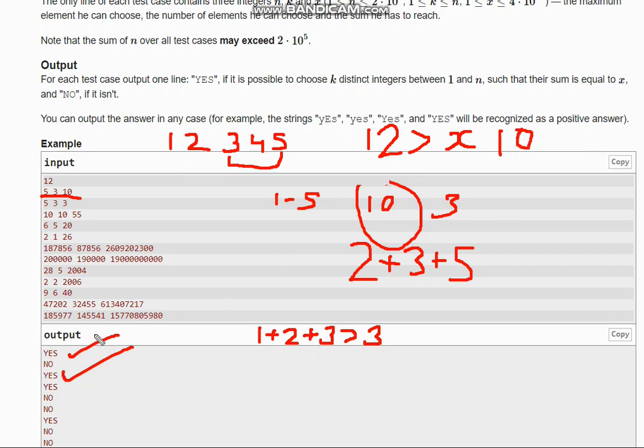Now taking the example of 5, 3, 3. Here also if you take the sum of 3 numbers which is 12, 12 is greater than 3. But in this case, we also need to check that the sum of the first 3 elements must be lesser than or equal to X.